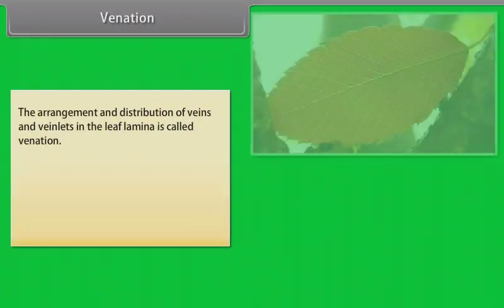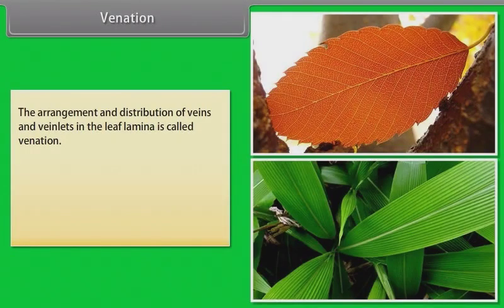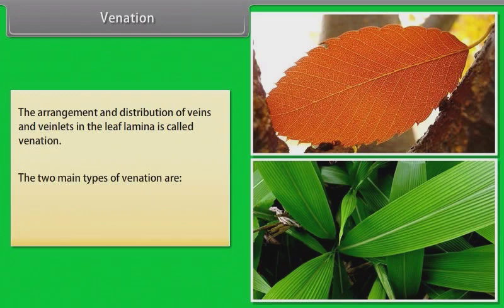Venation: The arrangement and distribution of veins and veinlets in the leaf lamina is called venation. The two main types of venation are reticulate and parallel.